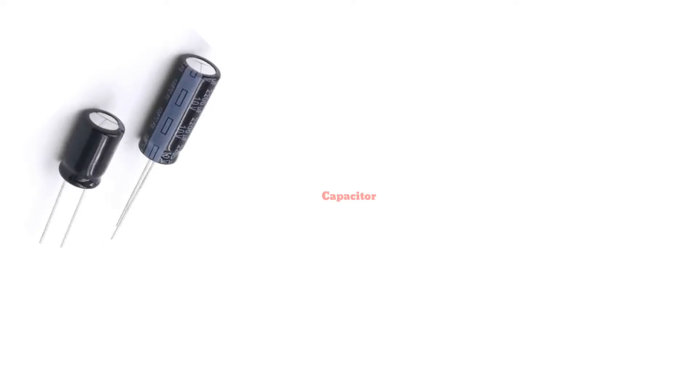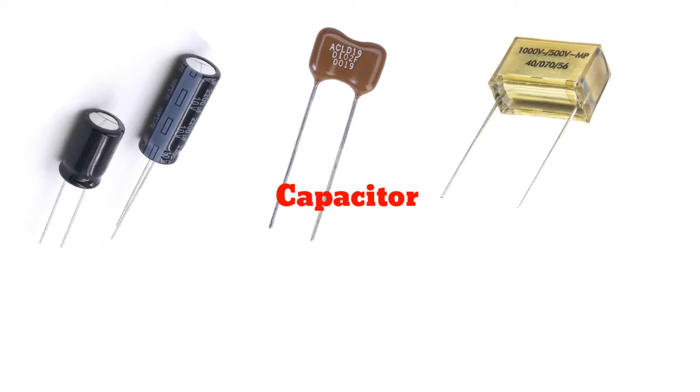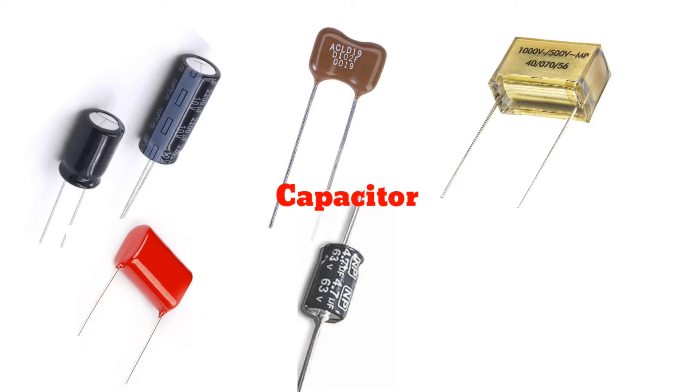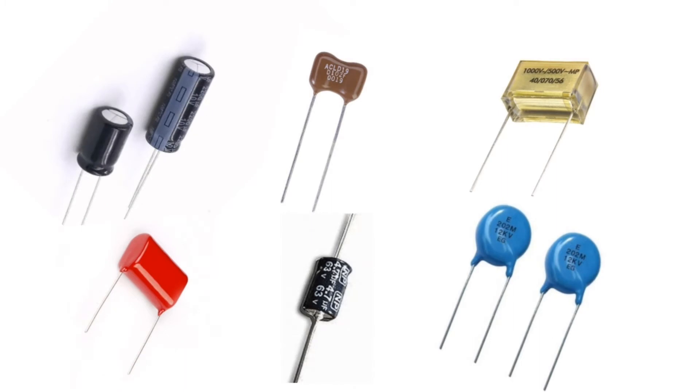A capacitor is an electronic component that stores and releases electricity in a circuit. It also passes alternating current without passing direct current. A capacitor is an indispensable part of electronic equipment and is almost invariably used in an electronic circuit. The different types of capacitors are following.